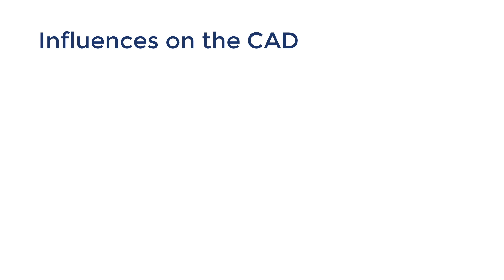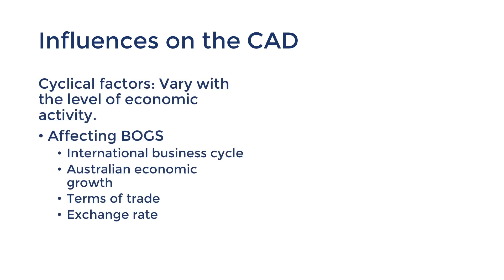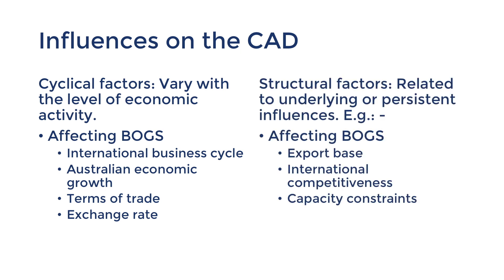In my previous videos about the influences on the current account, we learned that there are two types. Cyclical influences are more short-term in nature, whereas structural influences are more ongoing factors. Dutch Disease is a cyclical influence that has structural impacts.